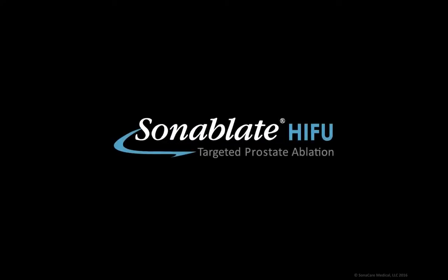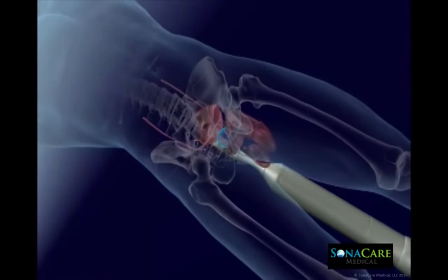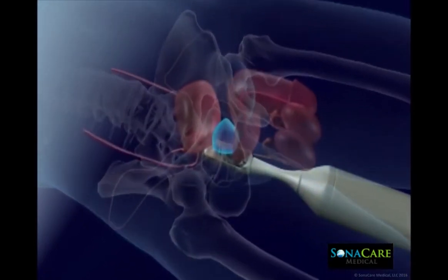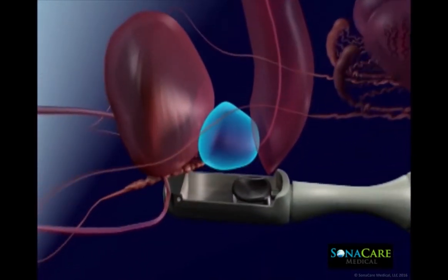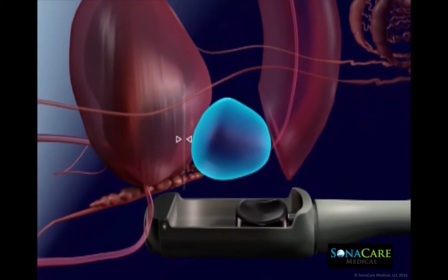The Sonoblate system is a physician-guided robotic device that is FDA cleared for transrectal high-intensity focused ultrasound ablation of prostatic tissue. HIFU is delivered via a transrectal probe that is securely positioned in the appropriate anatomical orientation at the beginning of the procedure.